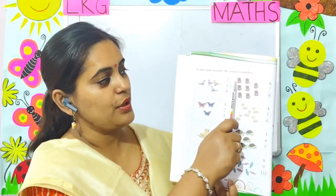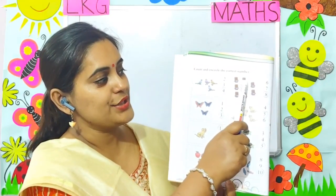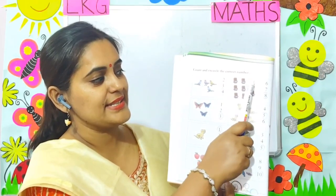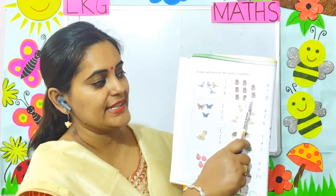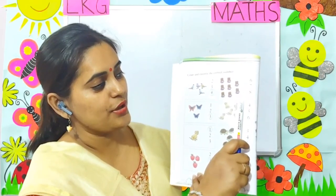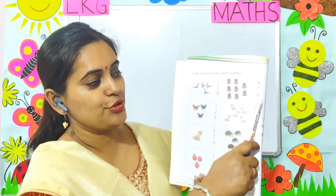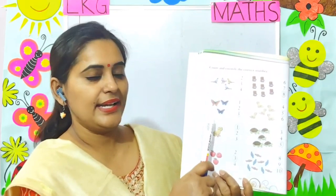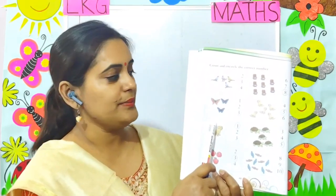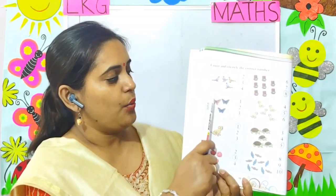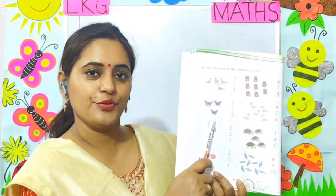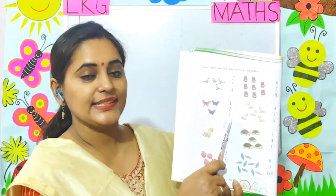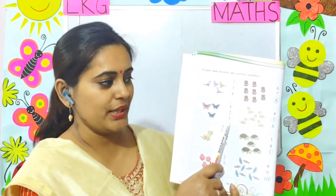Next picture: 1, 2, 3, 4, 5, 6, 7, 8 — 8 chocolates. So you will circle number 8. Next picture: 1, 2, 3 — 3 butterflies. Circle number 3.